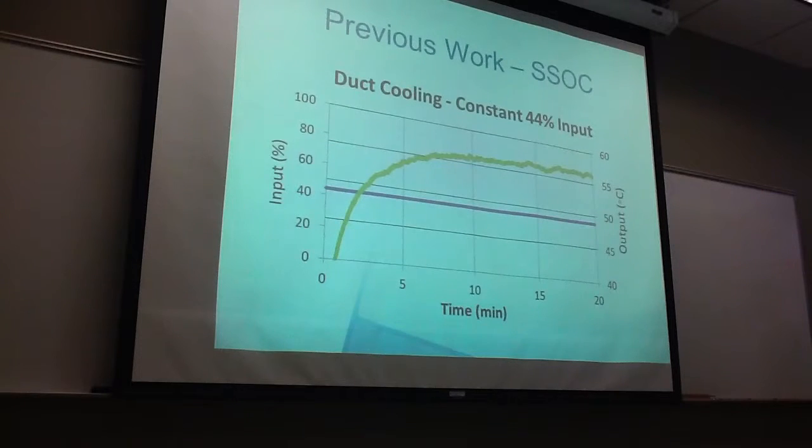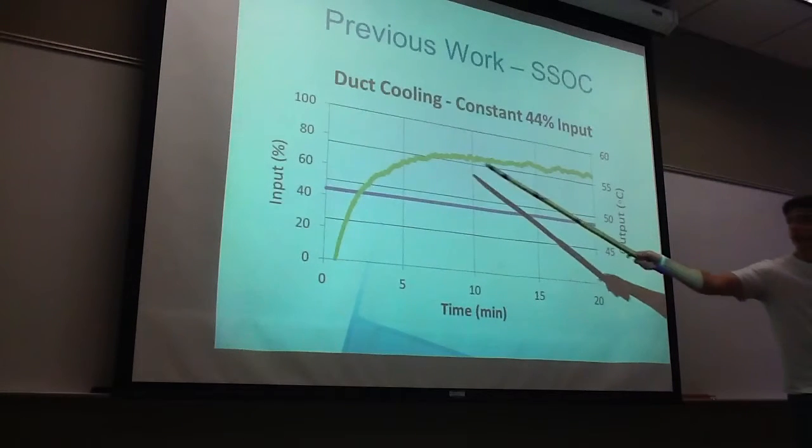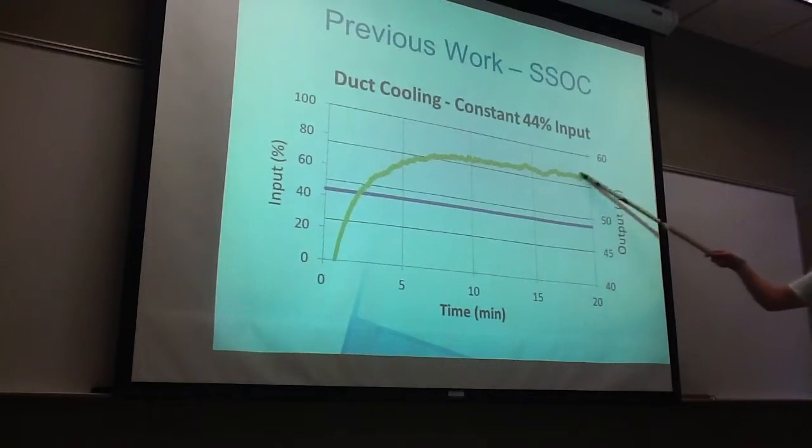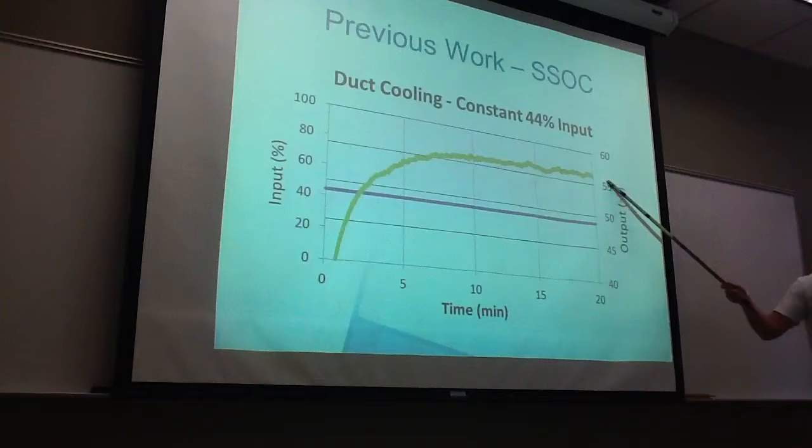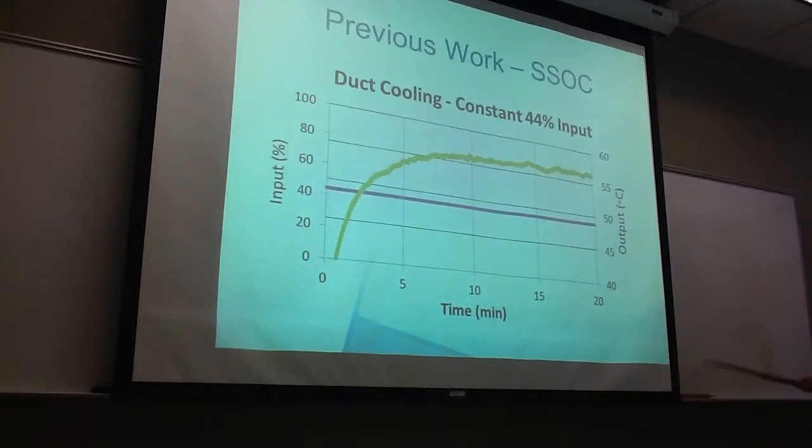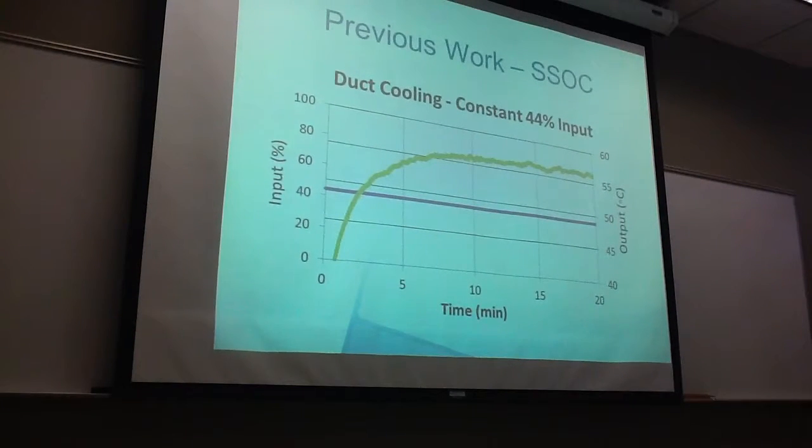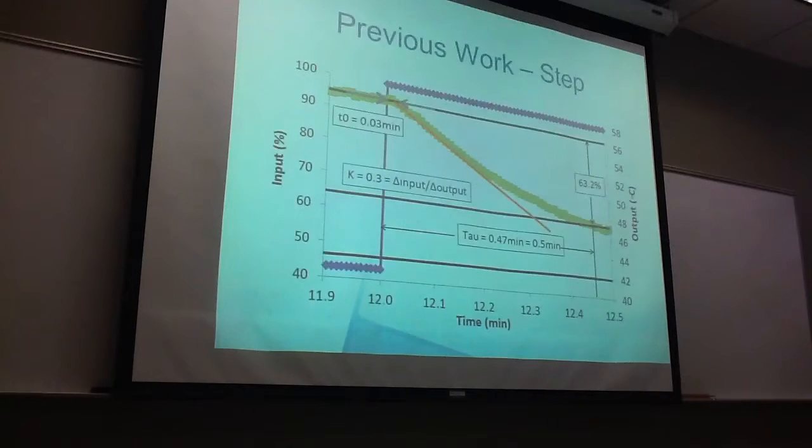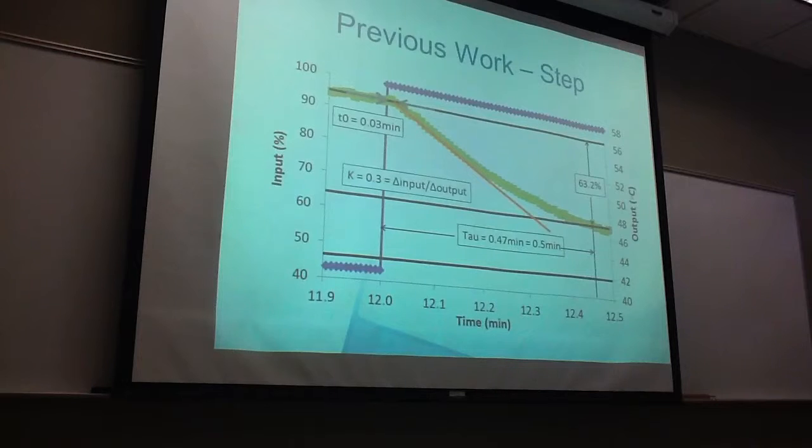This is our SSOC, steady state operating curve, from our duct cooling system, before we got switched over to the absorber air flow. And the goal of this experiment was to create a steady state of our output, which is just this green line right here. And as it flattens out, that means that it's going to steady state at around 56 degrees Celsius. And it took around 10 minutes to get to steady state.